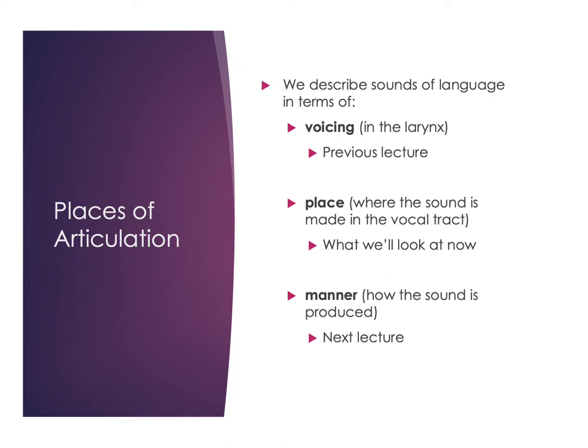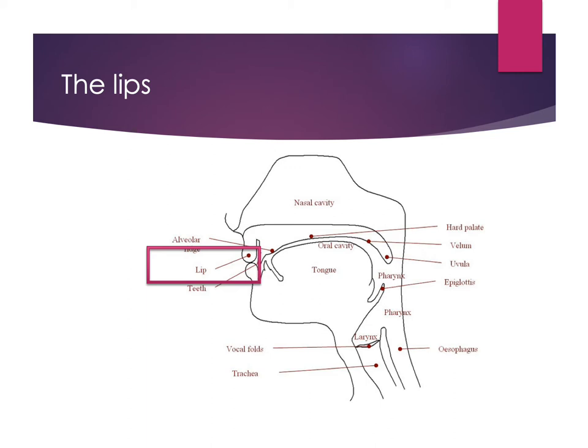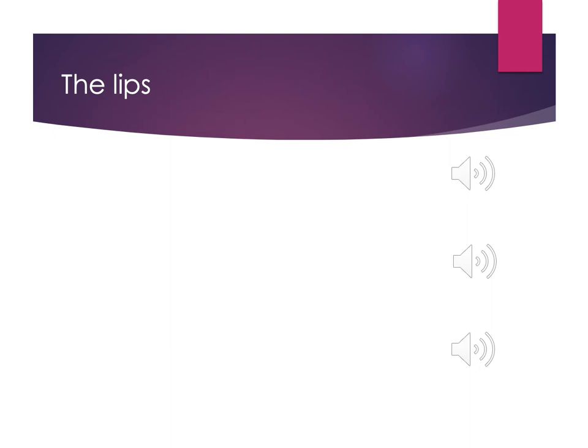Starting with specific places of articulation, we'll begin at the front of the oral cavity and move toward the back. We'll start with the lips, which are used as a place for certain sounds in languages of the world. English features several of these sounds as well. We'll focus on English sounds — ones you should be familiar with and able to describe using voicing, place, and manner.